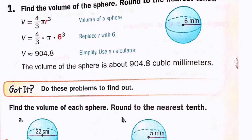Now I look at the graph. When I have the sphere, what is the radius? It's 6 mm, so I have a radius. Now substitute: 4 over 3 × pi, which is 3.14, × r³. What is r? It's 6. So 6 to the power of 3, which means 6 × 6 × 6. Rounded to the nearest tenth, the answer is going to be 904.8. The unit of measurement is millimeters, so the answer is 904.8 cubic millimeters, or mm³.